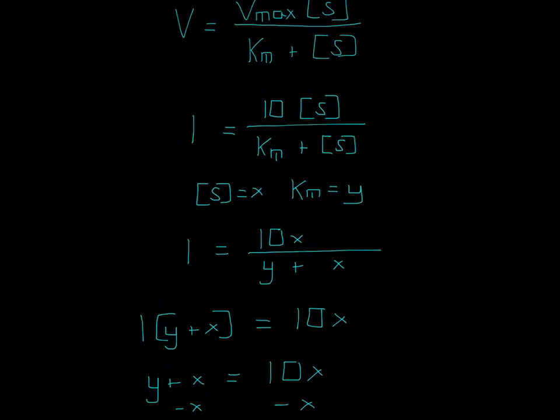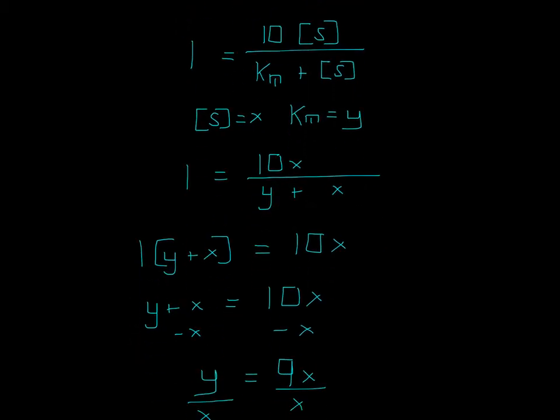So now let's multiply each side by Y plus X, so that this cancels out. And then we multiply one by each of these, so then you just get Y plus X equals 10X.